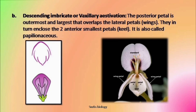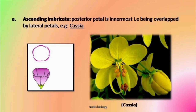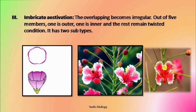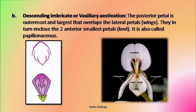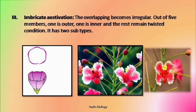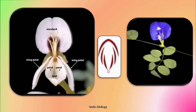When we talk of imbricate aestivation we are usually referring to ascending imbricate. If you write only imbricate: one in, one out, and three in and out. If you write ascending imbricate: anterior one out, any one in, and three in and out. In descending imbricate: posterior is completely out, two laterals are in and out, and small keels are completely covered. Simple imbricate is seen in Gulmohar and descending imbricate is seen in Papilionaceae family.